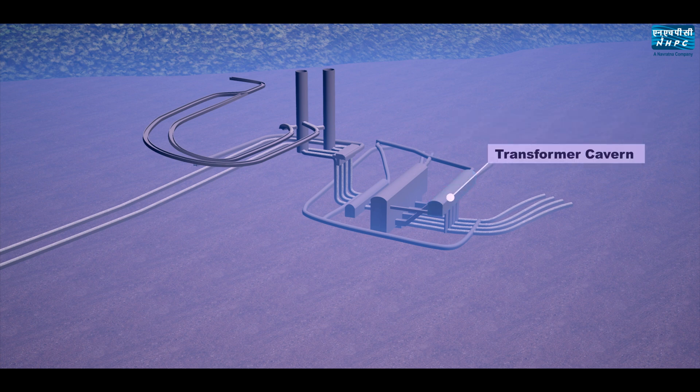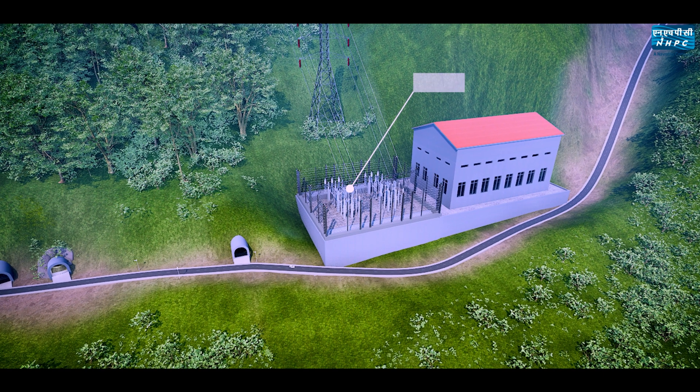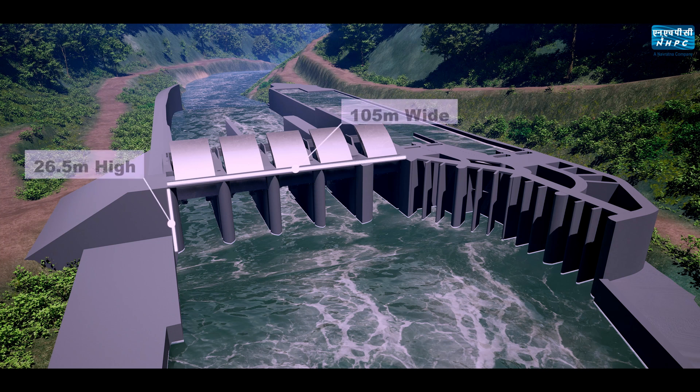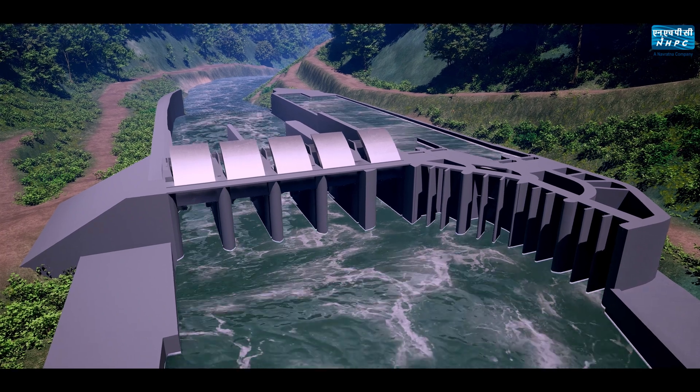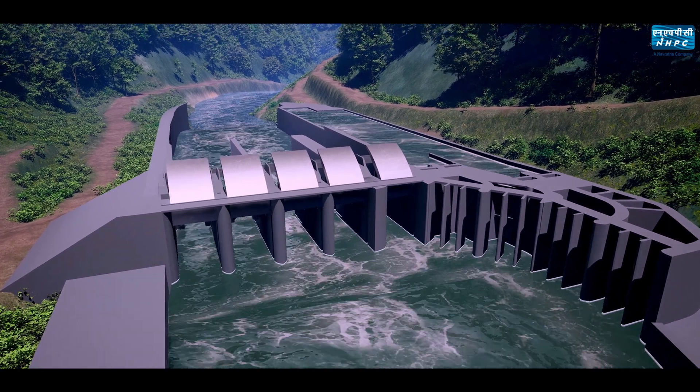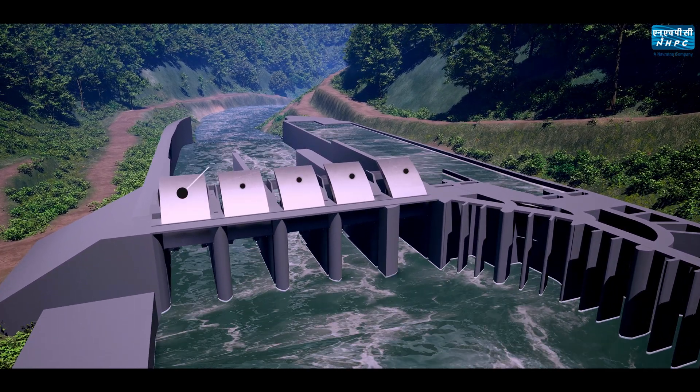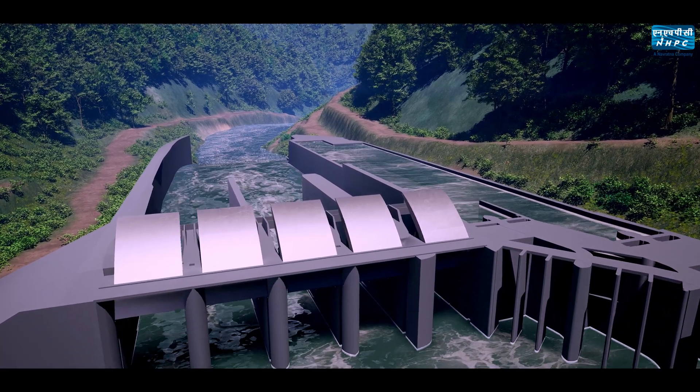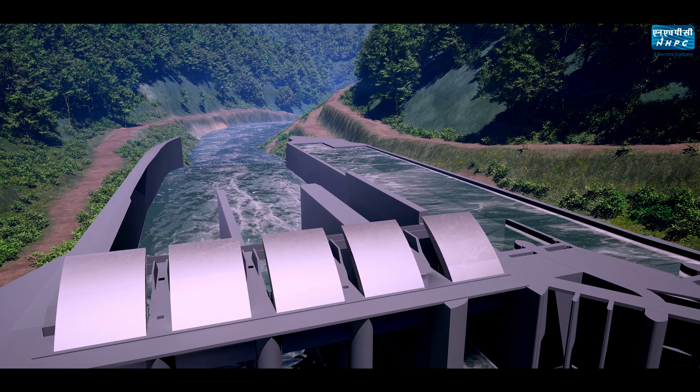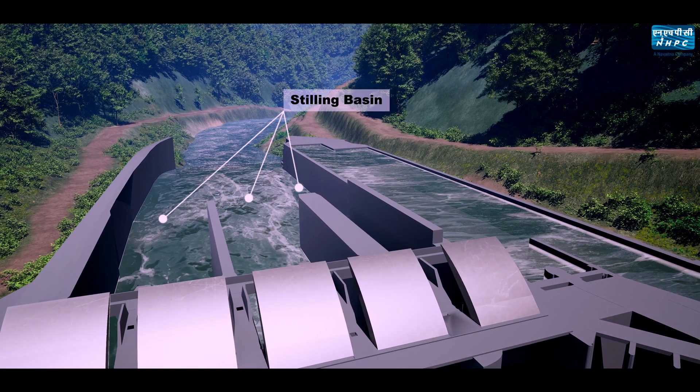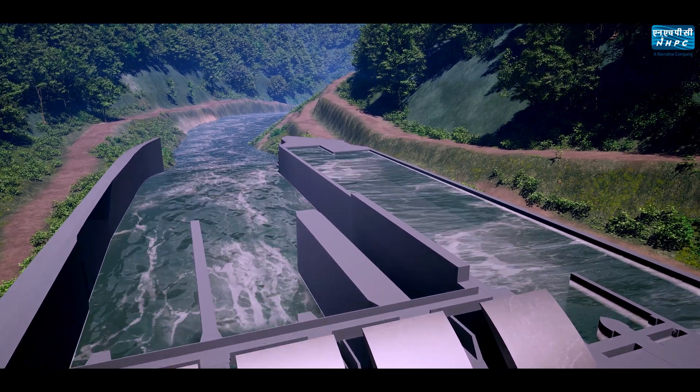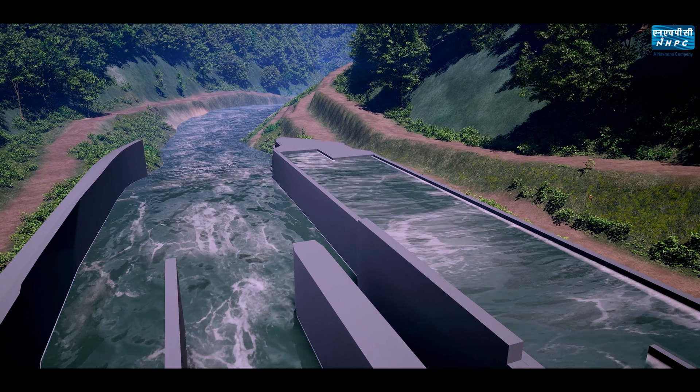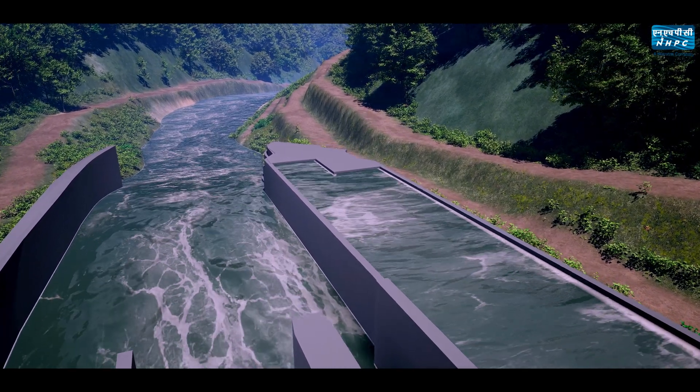The barrage is 105 meters wide and 26.5 meters high. The water in excess of the requirement of power generation shall be passed through spillway bays regulated by radial gates. The barrage has been designed to pass a flood of 11,600 cumecs. A conventional stilling basin type energy dissipation arrangement has been provided with a length of 75 meters and an end sill at its downstream end.